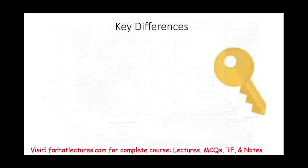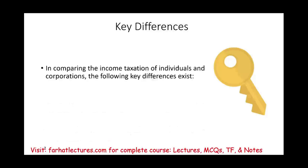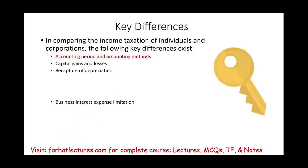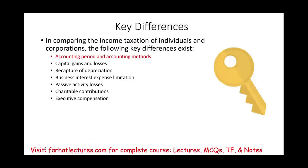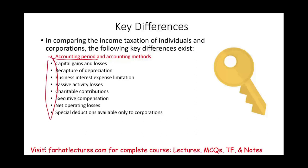Key differences between corporations and individuals include: accounting period and accounting method, capital gains and capital losses, recapture of depreciation, business interest expense limitation, passive activity losses, charitable contributions, executive compensation, net operating loss, and special deductions only available for corporations such as the dividends received deduction. In this session, we will focus on accounting period and accounting method.